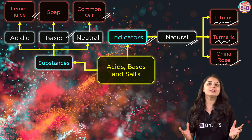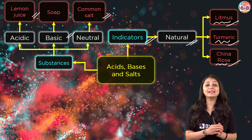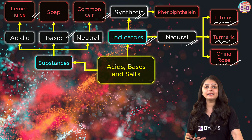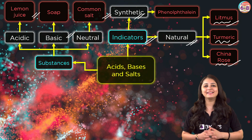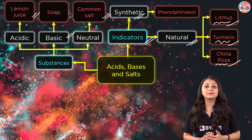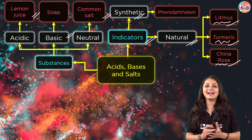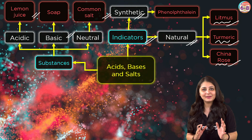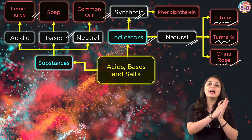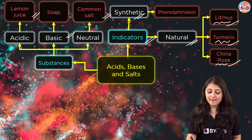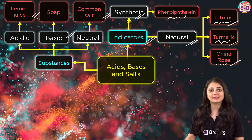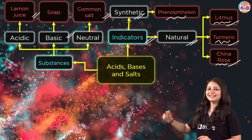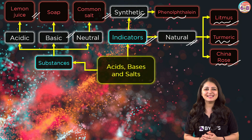That covers natural indicators. Now, coming to synthetic indicators — these are man-made indicators. For example, phenolphthalein remains colorless in acidic medium and also in neutral conditions. It changes to pink in basic solutions, which is how we identify that a given substance is basic.